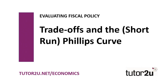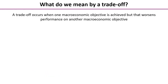In this third online video for our online lesson on evaluating fiscal policy, we're going to explore the meaning of trade-offs in economics and link that in with the short-run Phillips Curve. A trade-off for an economist occurs when one macro objective is achieved but when we achieve that, we worsen the performance on another macro objective.